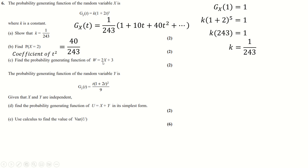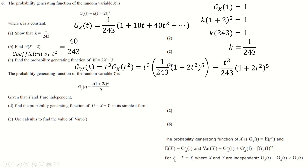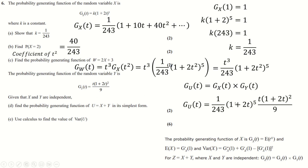For the PGF of Y = 3X, there is a standard rule: G_Y(t) = G_X(t³), i.e., replace t with t³ and multiply by t to the power of the constant. Substituting gives the PGF of Y. Since X and Y are independent, the PGF of U = X + Y is G_U(t) = G_X(t) × G_Y(t). Multiplying these two functions together simplifies to give the combined PGF.